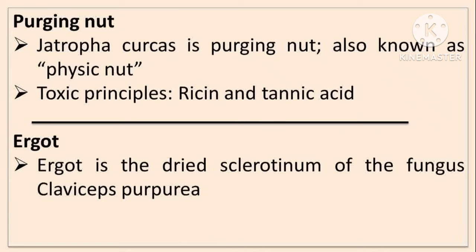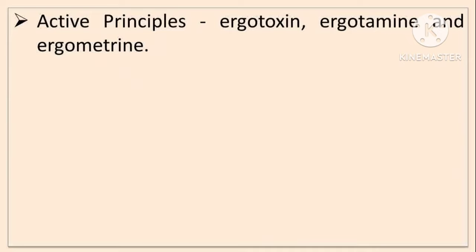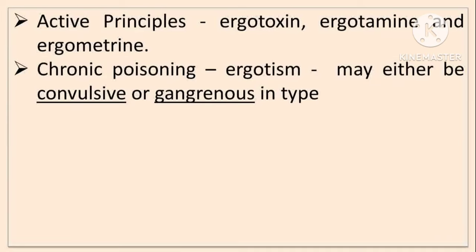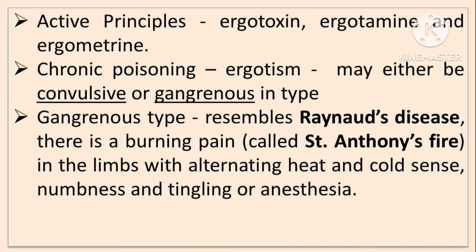Ergot is a dried sclerotium of the fungus Claviceps purpurea. The active principles are ergotoxin, ergotamine, and ergometrine. Chronic poisoning is called ergotism, and it may be either convulsive or gangrenous type. In gangrenous type, it resembles Raynaud's disease, and there is a burning pain called St. Anthony's fire. In that condition, there is alternating heat and cold sensation in the limbs, and also numbness, tingling, or anesthesia.